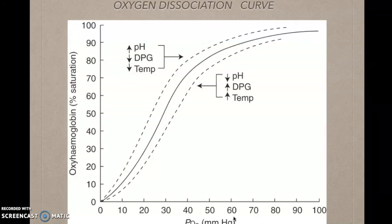Next is the oxygen dissociation curve. This graph helps us understand how much oxygen is associated with hemoglobin and how much is dissociated. If the graph shifts to the left, oxygen association is more. The factors affecting the dissociation curve are pH, DPG, and temperature. When pH is high, H+ ions are low, DPG is low, and temperature is low, more oxyhemoglobin is formed. When pH is low, H+ ions are high, DPG is high, and temperature is high, there is more oxygen dissociation from hemoglobin.